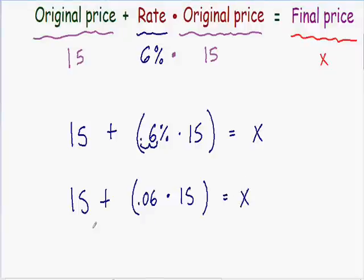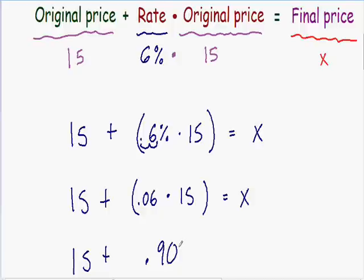Now we can simplify this equation further. We multiply 0.06 times 15, which equals 0.90. The reason I wrote 0.90 instead of 0.9 is because when you're dealing with dollars and cents, you should always round to two decimal places. This is all still equal to x.